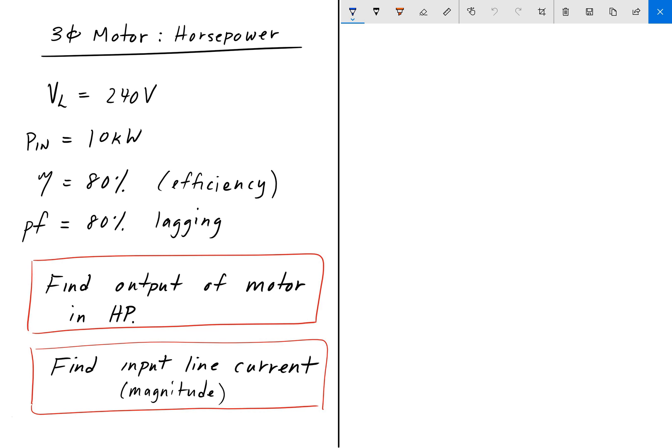Let's say that we have a three-phase motor whose input, the line, is 240 volts. The power in is 10 kilowatts. The efficiency of the motor is 80%, and the power factor is given as 80% lagging. So here we are asked to find the output of the motor in horsepower and find the magnitude of the input line current.